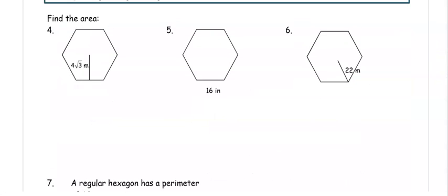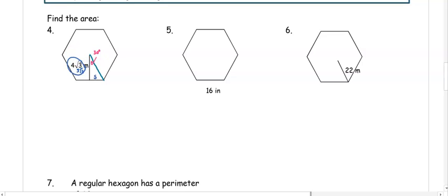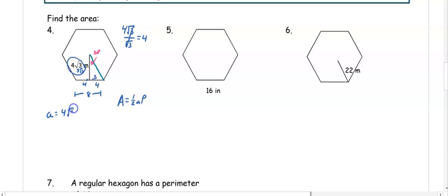For number four, we want to find the area of a hexagon. Drawing in the line to create the triangle gives a 30-degree angle — a special right triangle. We have sides s and s root 3. We know 4 root 3 is on the s root 3 side, so dividing by root 3 gives s equals 4. Since the side is split into two congruent parts of 4 and 4, the whole side is 8. The apothem given is 4 root 3.